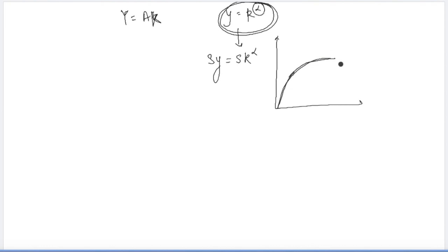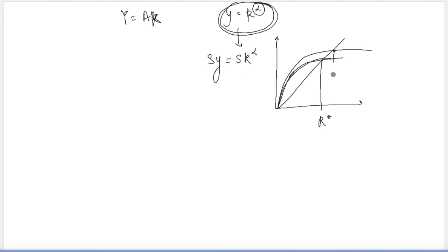If the value of alpha is small, the curvature of the savings curve grows very rapidly and the steady state stock of capital is achieved at a small value. Whereas if the value of alpha is larger, the curve grows a little slower — meaning the slope becomes slightly flatter — and you reach the steady state stock of capital at a higher level. As alpha increases, the slope becomes flatter and flatter, and as it becomes flat, the steady state stock of capital increases because the curvature slowly decreases.